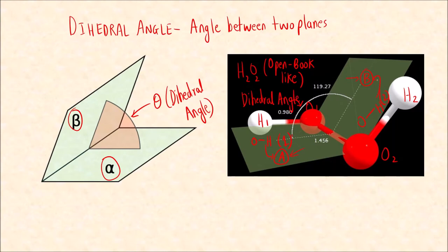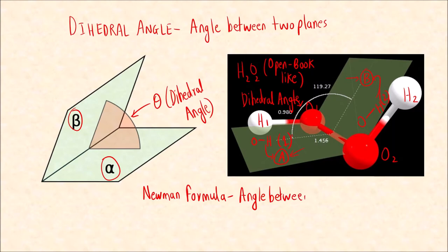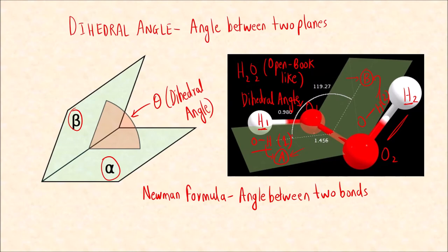So what is the dihedral angle? It is the angle between the two planes. In Newman projection formula, it is the same as the angle between two bonds that are not directly attached to each other. Both hydrogens in H₂O₂ are attached to different oxygens, so the dihedral angle is the angle between those two O-H bonds.